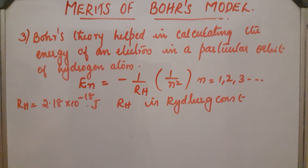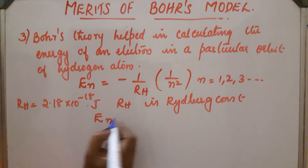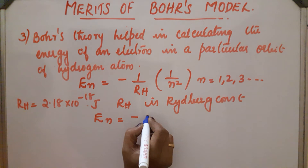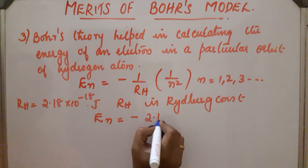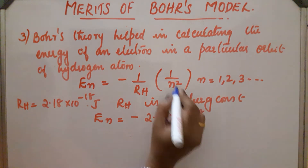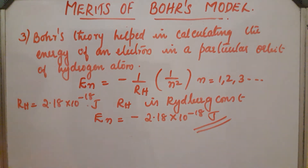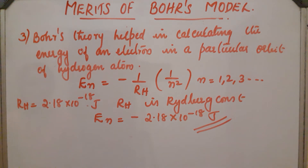For the ground state, what will be the En value? En at N equals 1 is equal to minus 2.18 × 10⁻¹⁸ joules, since 1 by N² is 1. This is En for the ground state. Like this, we can calculate the energy of different orbits.